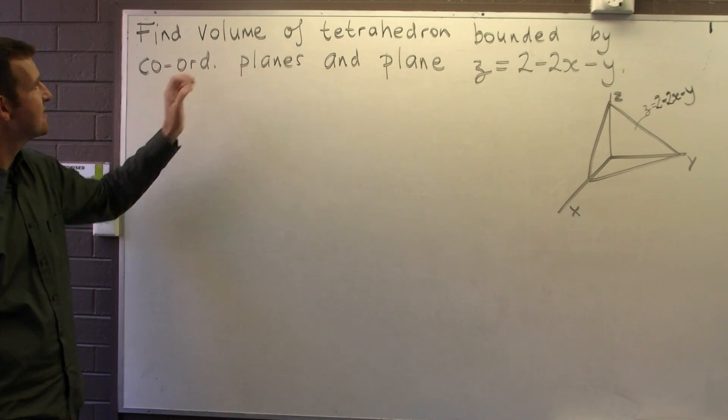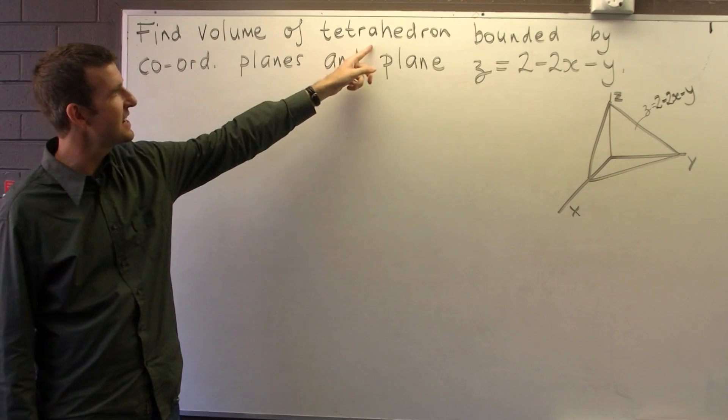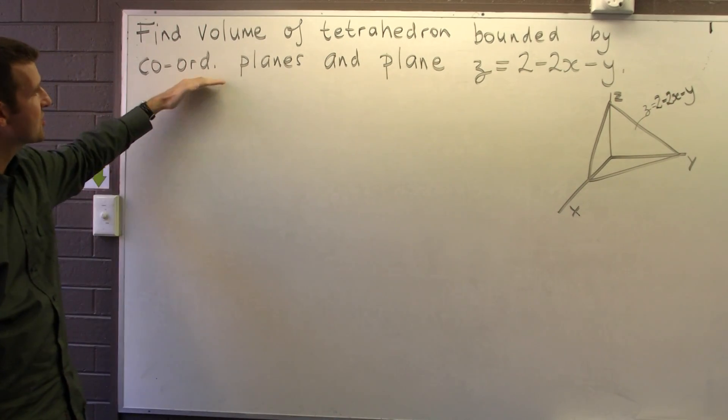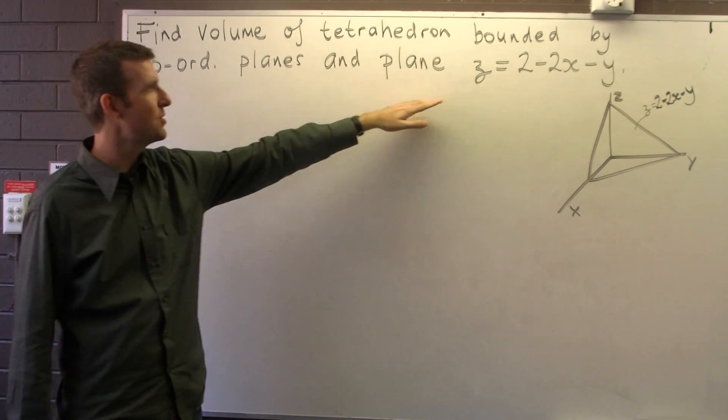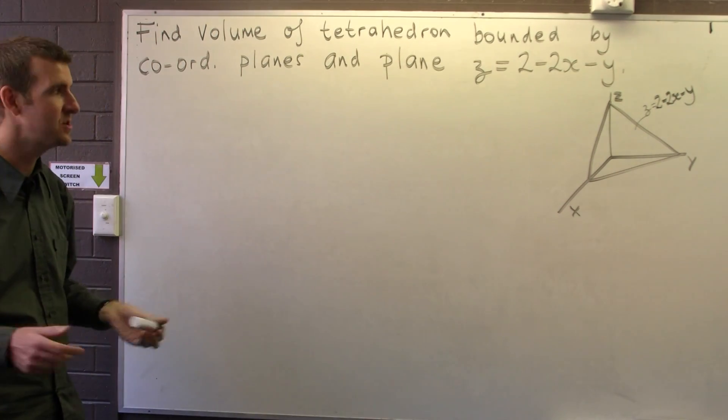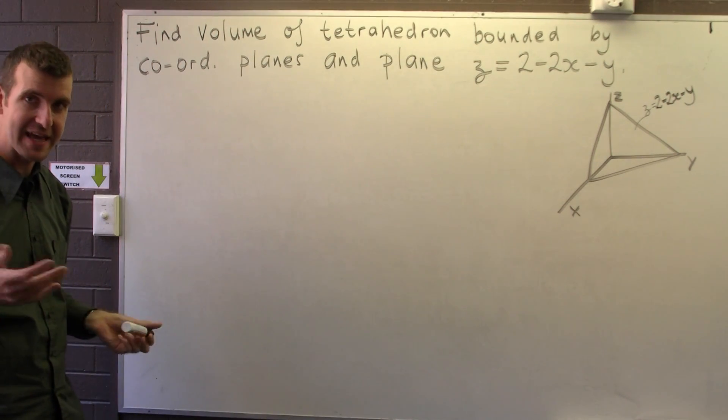So we want to find the volume of the tetrahedron bounded by the coordinate planes and by this particular plane. So how do we do it? Well, drawing a picture is an excellent start.